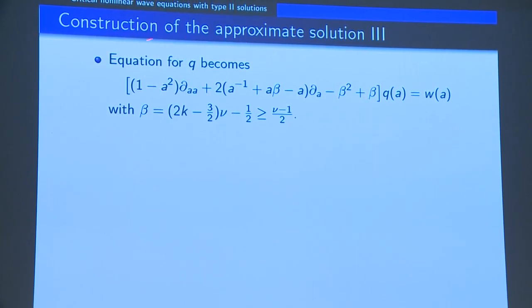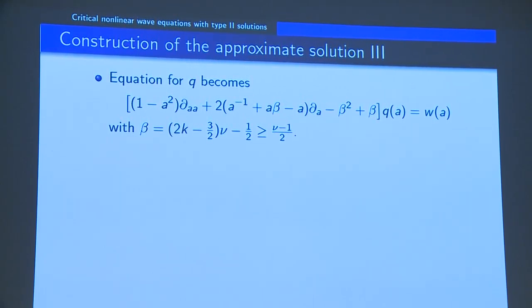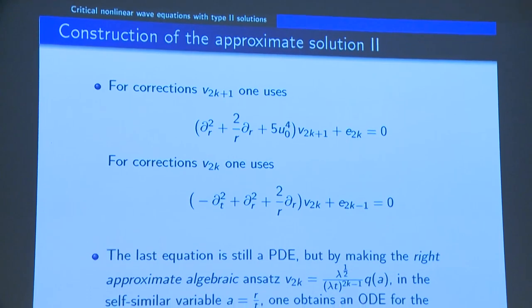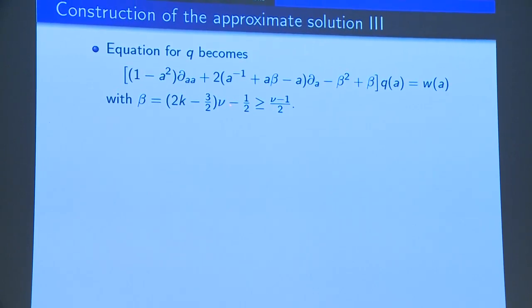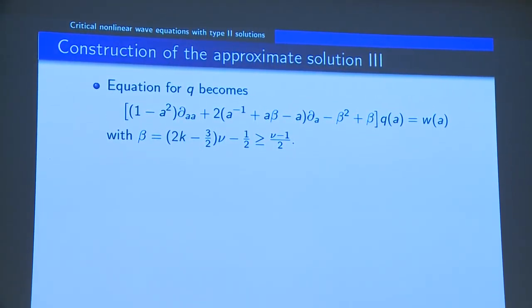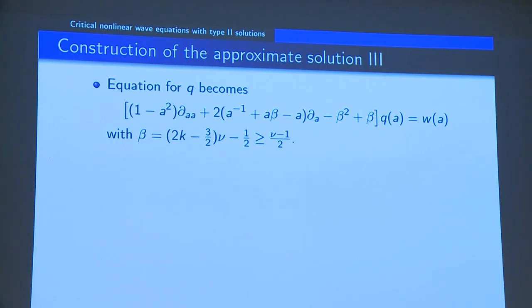This ODE, as expected, is singular both at the origin and at the light cone. This ODE depends on the choice of λ, so this is where ν enters. There is a coefficient β depending on ν and the stage of iteration. It turns out that if you choose ν positive — which is exactly the requirement given by Duyckaerts-Kenig-Merle — the solutions of this ODE across the light cone are of regularity H^{1+ν/2}. That's exactly where the finite regularity of our solution comes from.